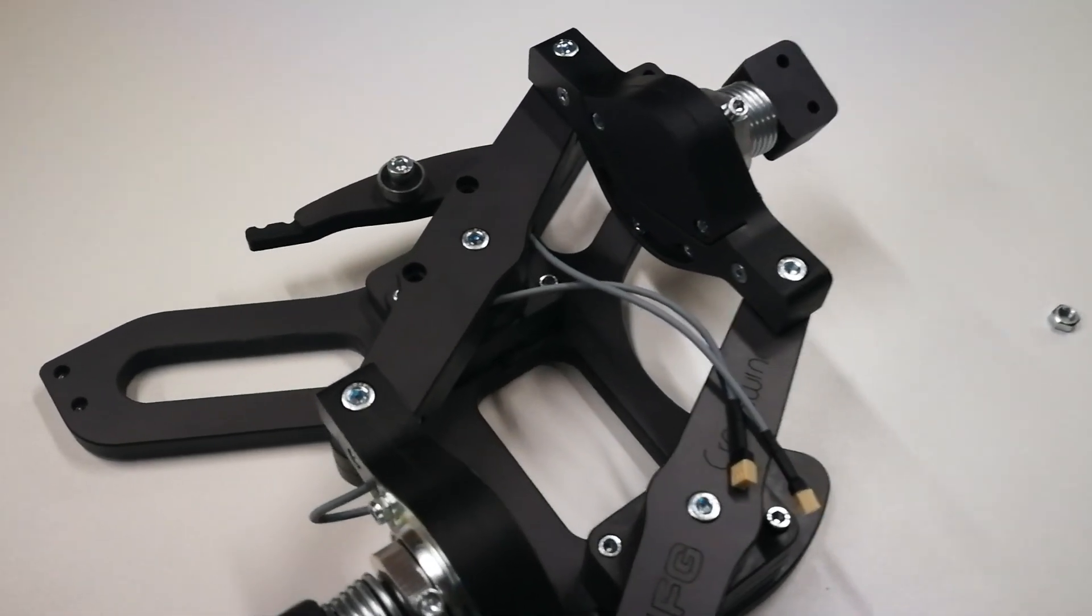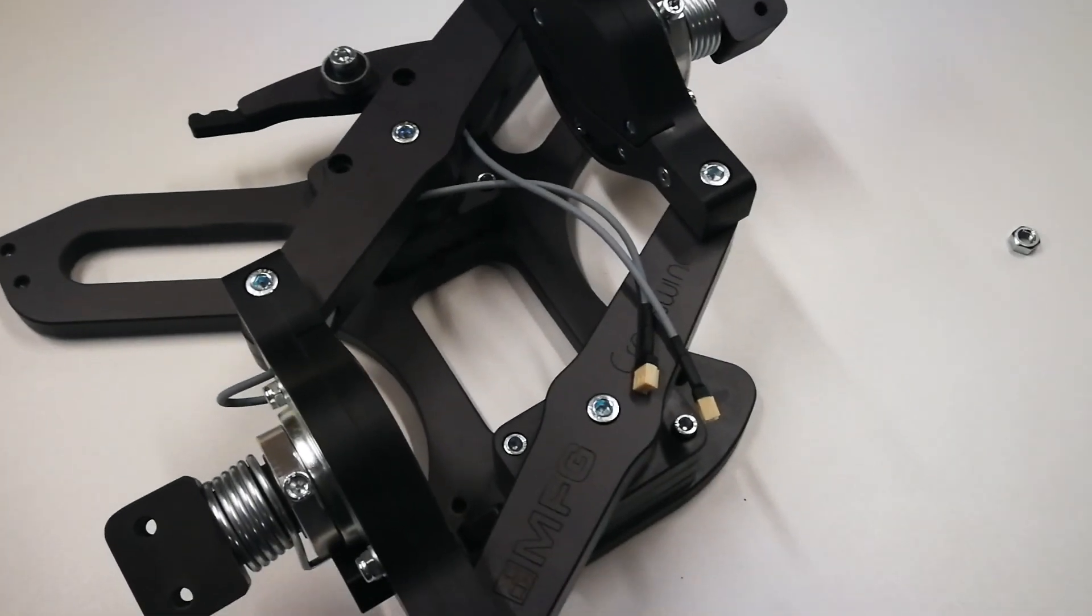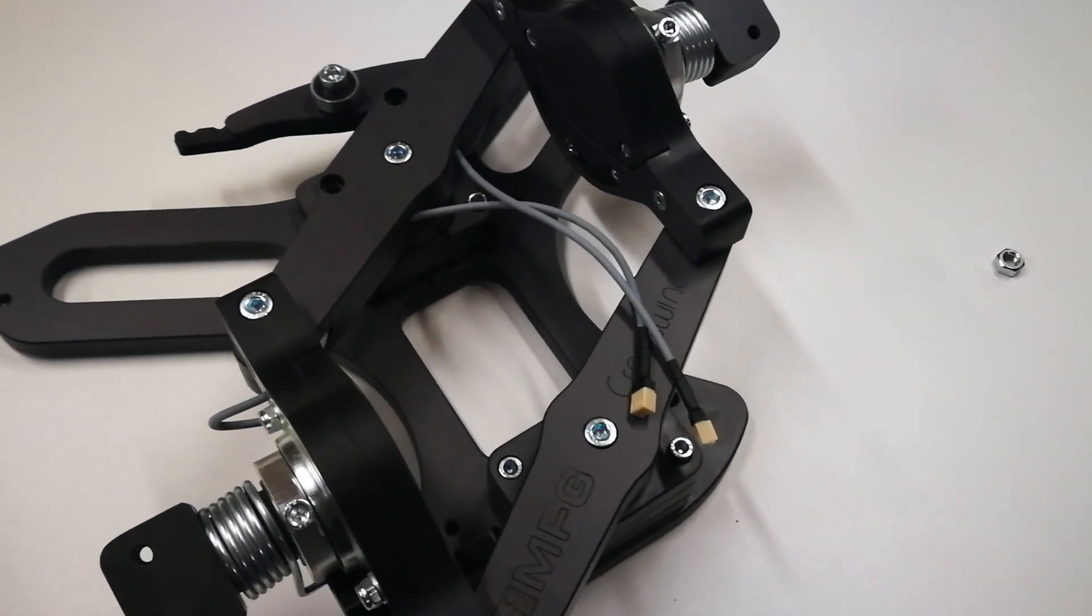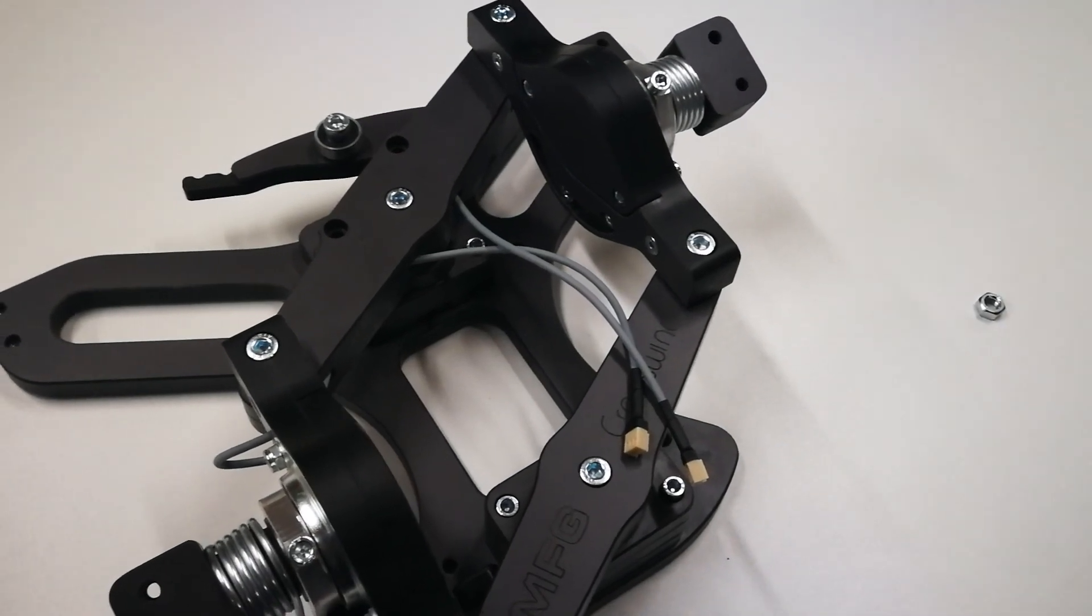This is the instructional video for earlier models of MFG crosswind rudder pedals V1 and V2 up to serial number 1964.